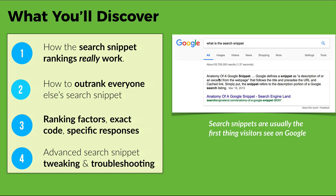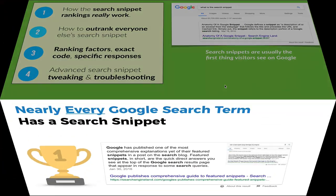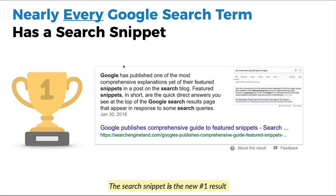Search snippets are the answer that appears on top of Google search results. A lot of people call this rank number zero. You have the organic listings below, and this is really the first thing that people see — it takes up most of the page. Nearly every single Google search term these days has a search snippet result, and if it doesn't, a lot of times you could almost trick it into getting one. As far as I'm concerned, the search snippet is the new number one result.